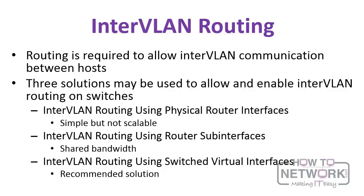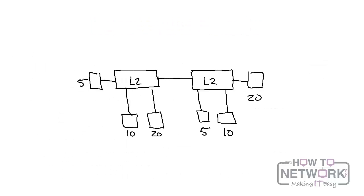As you probably already know, routing is required to allow inter-VLAN communications. There are three solutions that may be used to enable inter-VLAN routing on switches: inter-VLAN routing using physical router interfaces, inter-VLAN routing using router sub-interfaces, and inter-VLAN routing using switched virtual interfaces. Using SVIs is the recommended solution.